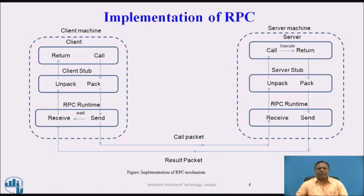The server stub unpacks the parameters and function name, and sends that method to the server for execution. The result is sent from the server to the server stub. The server stub packs the result into a particular format and sends it to the RPC runtime server. The RPC runtime server sends the result packet to the RPC runtime client, which sends it to the client stub. The client stub unpacks the result and sends it to the client, which receives the proper output.